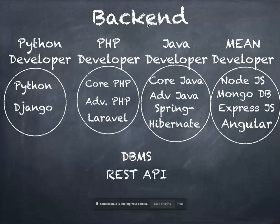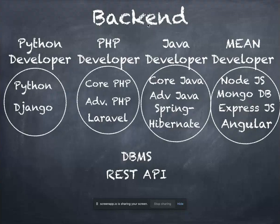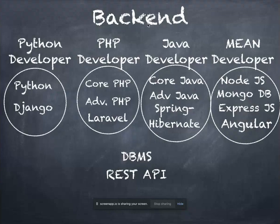We also teach REST API, which is common to all four back-end tracks. REST API is about writing web services that allow the same data to be used across different types of devices. For example, Amazon has both a website and a mobile app, and both are synced to the same data. You can add a product on the website and see it on the app because of REST API — that's why we teach this topic to all our students.